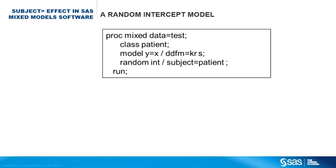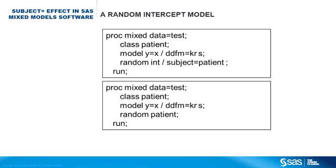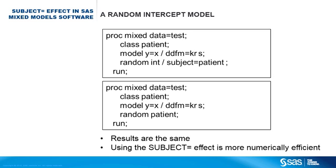You can fit a random intercept model. This model is equivalent to the second model statistically, so you will get identical results. But using the subject equal effect is more numerically efficient because the procedure will block the variance-covariance matrix, meaning that the computation is faster and less memory is consumed.